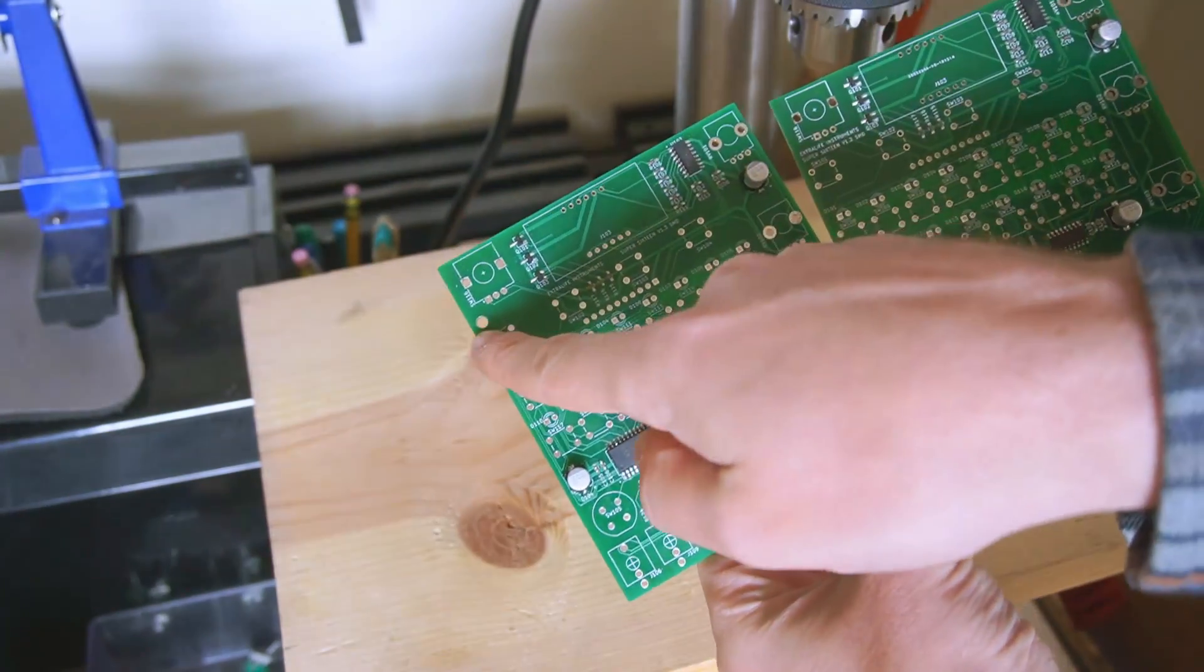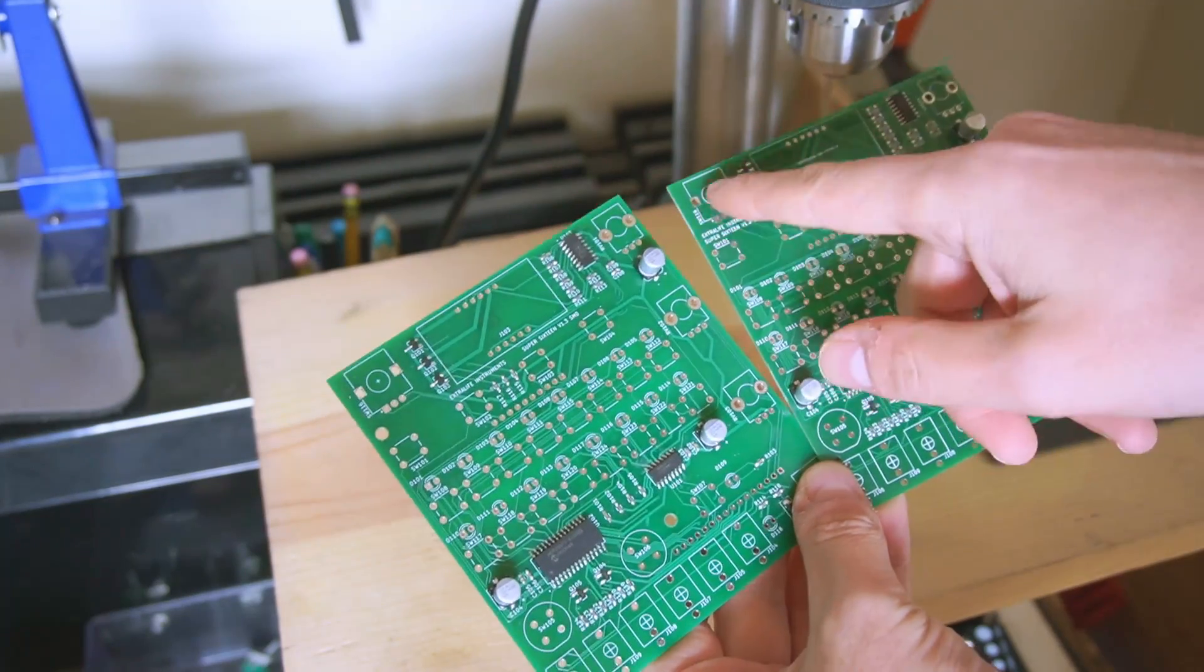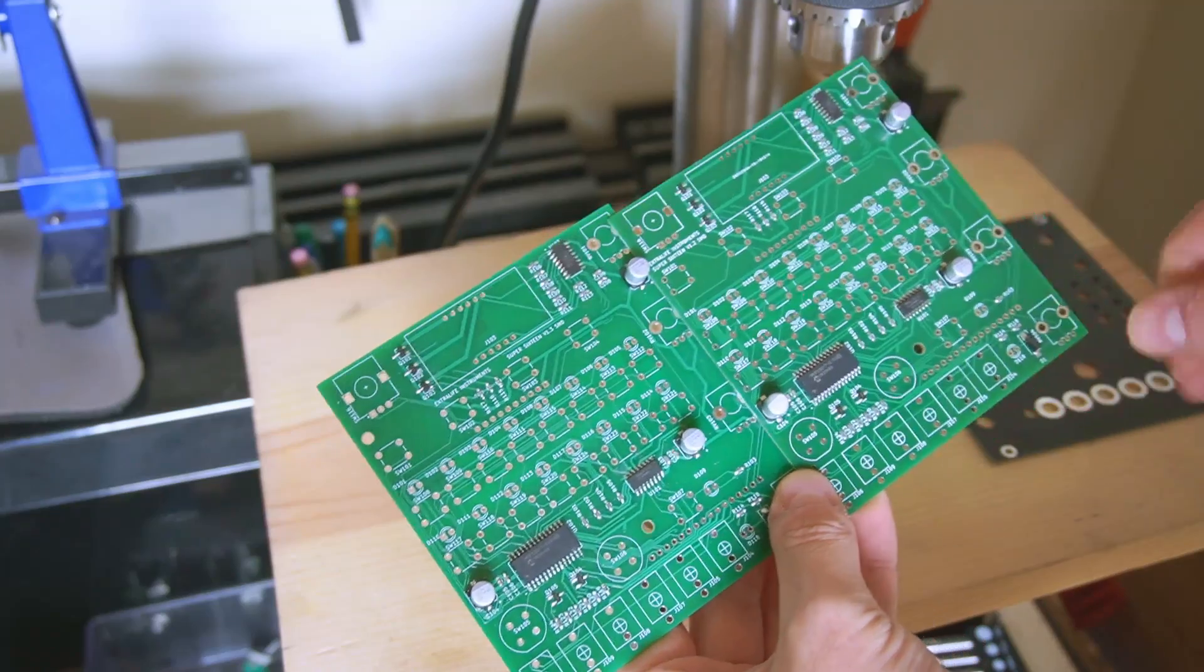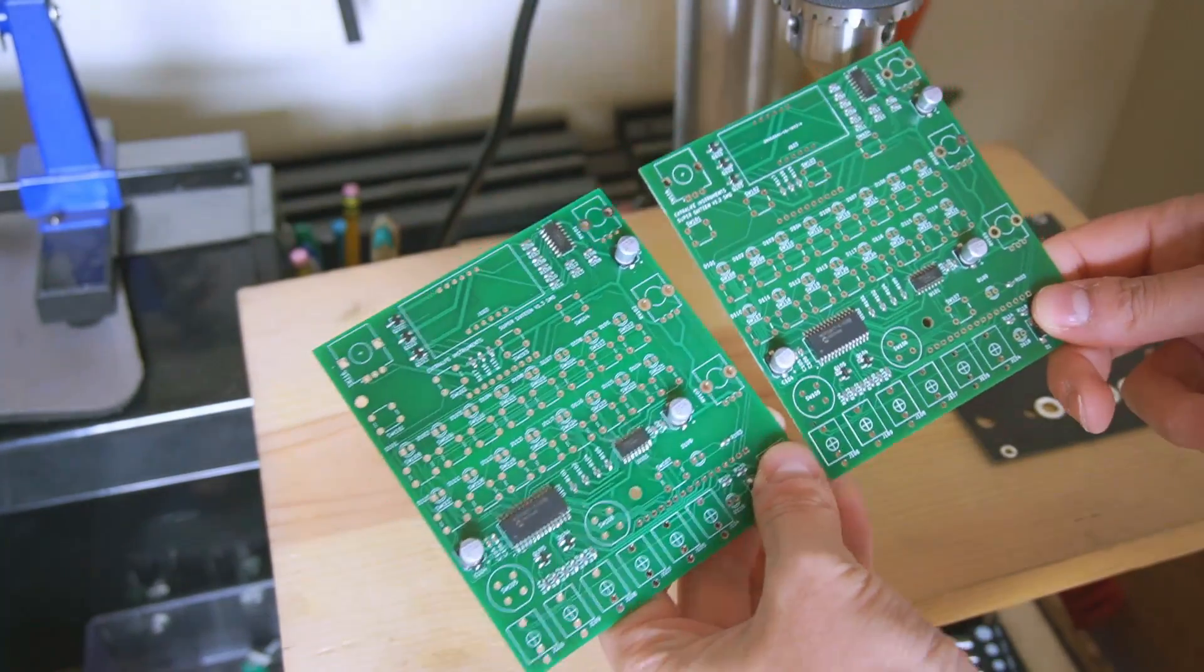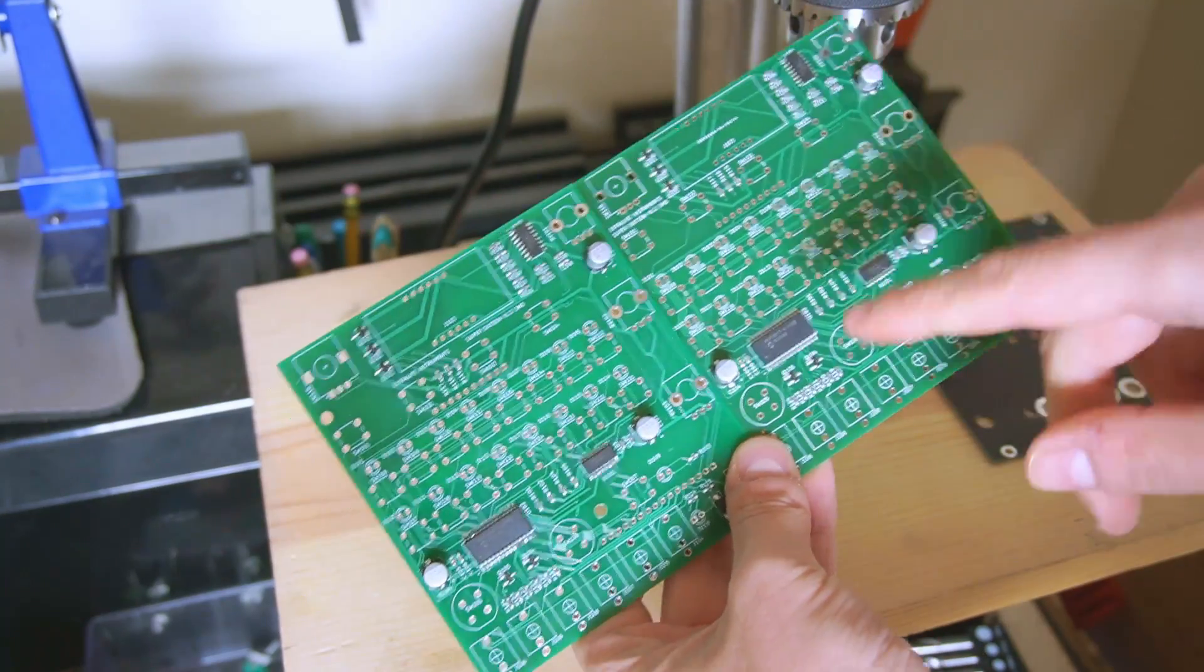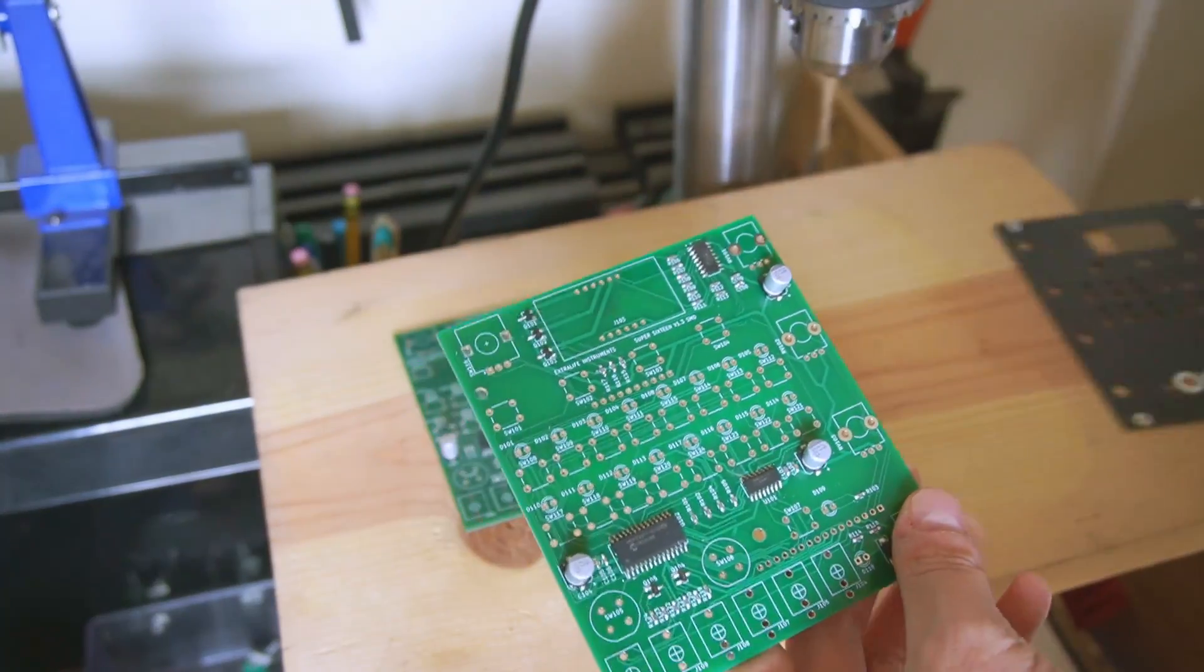This one's got some very small changes. There's a new standoff hole over here by the encoder, which should help because not all the encoders have the threaded bushings. So if you're assembling without one, then you can use this standoff instead. And also the components are shifted around slightly. I found that the through hole and the SMD versions were not quite consistent. So this one should properly fit these new faceplates.